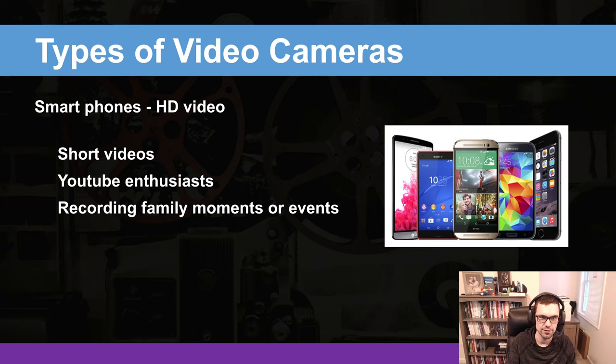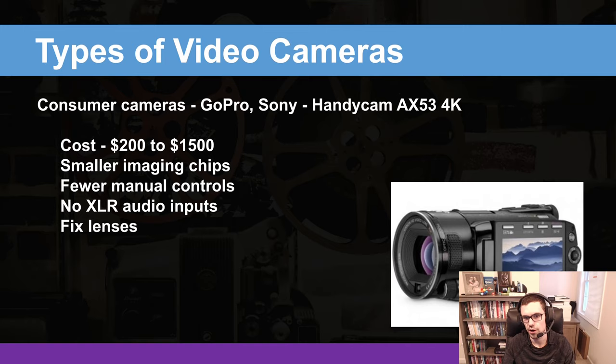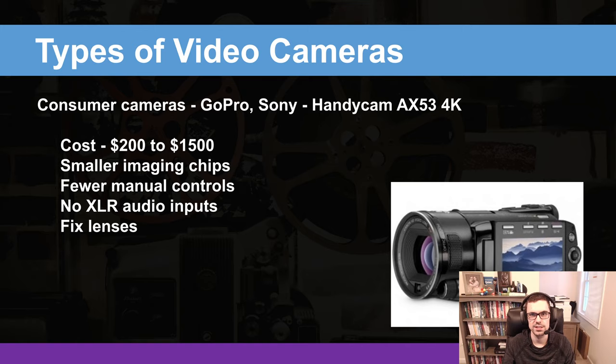The next step is consumer cameras — things like the GoPro or the Sony Handycam AX53 4K, ranging from about $200 to $1,500. They have smaller imaging chips, fewer manual controls, and no XLR inputs, so you're stuck with the camera's built-in audio. They have fixed lenses you can't change out, which is the biggest disadvantage. But they're great cameras when starting out or on a fixed budget — if you only have $500, it's a great camera to pick up and can produce great video.